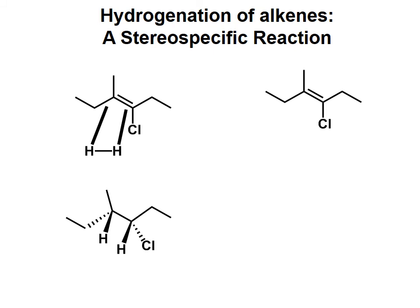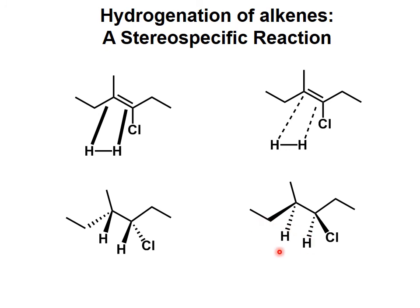Now let's consider what happens if the two hydrogens come from back behind the screen. They're coming from underneath, so they'll both be bonded going backwards — that means the ethyl group gets pushed forward and the chloro gets pushed forward. Two hydrogens came from the back by syn addition and pushed the ethyl and chloro forward. If you determine the configurations, on the left you find the carbons have the S and S configuration. For the molecule on the right, since the hydrogens came from the opposite direction, you get the opposite configuration: R and R. These are the only two stereoisomeric products possible here.